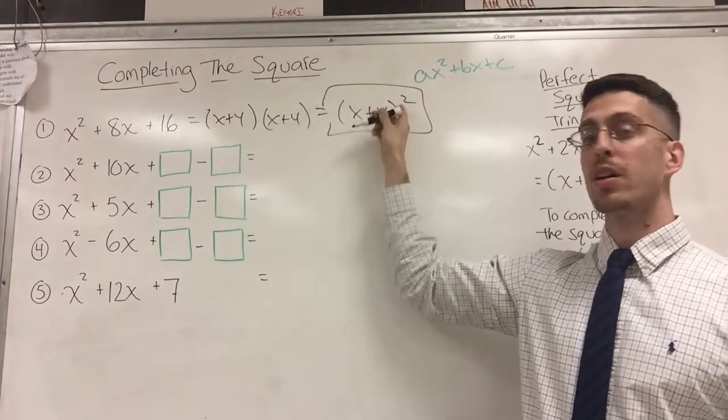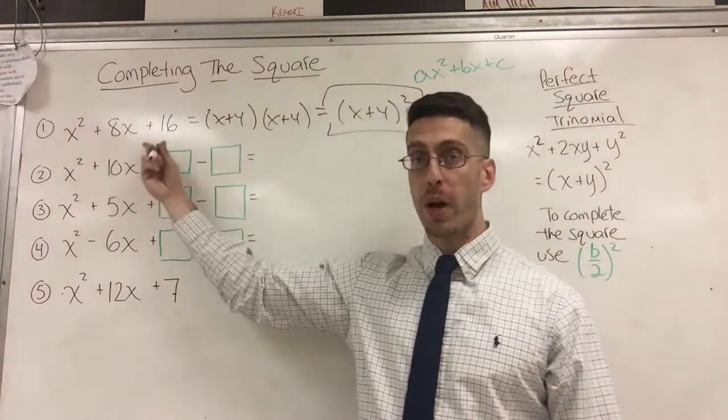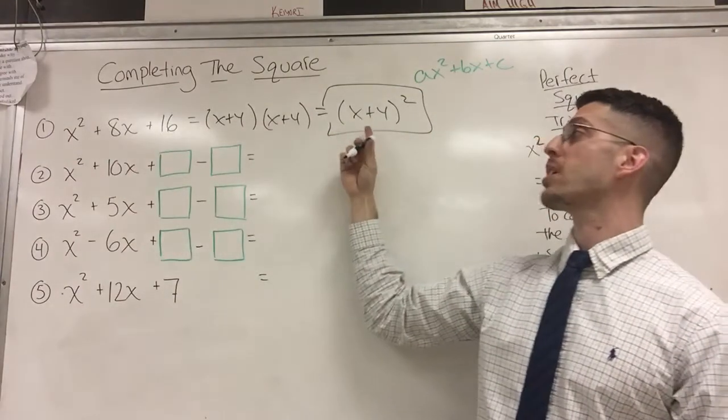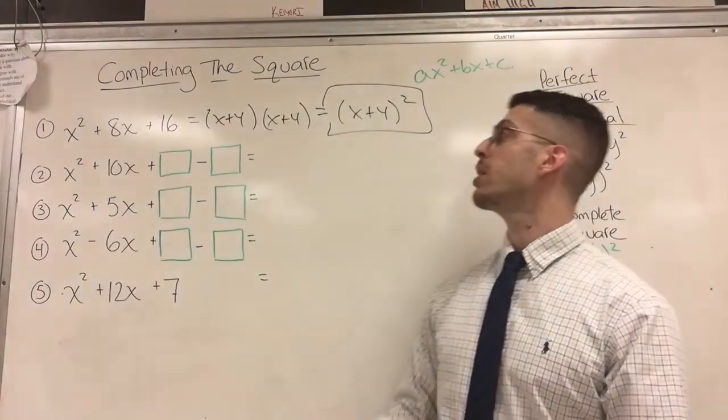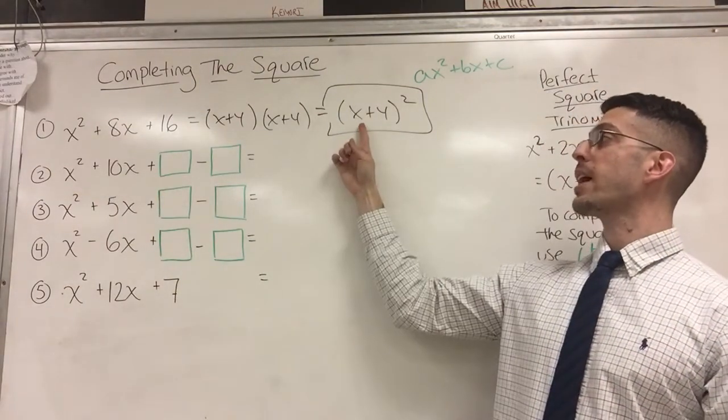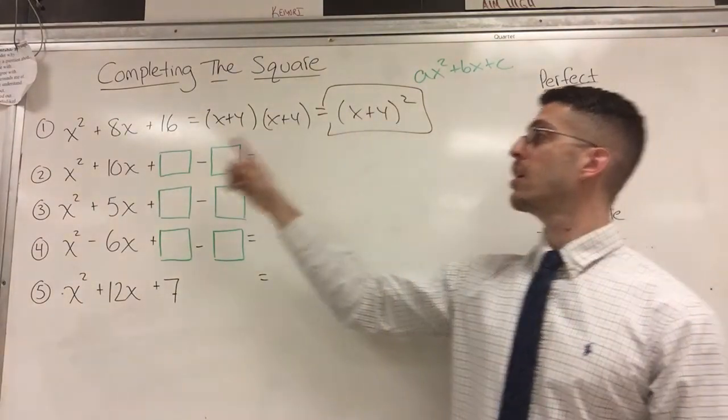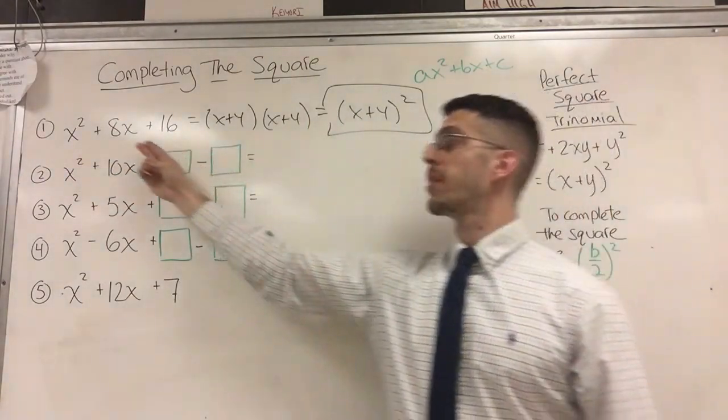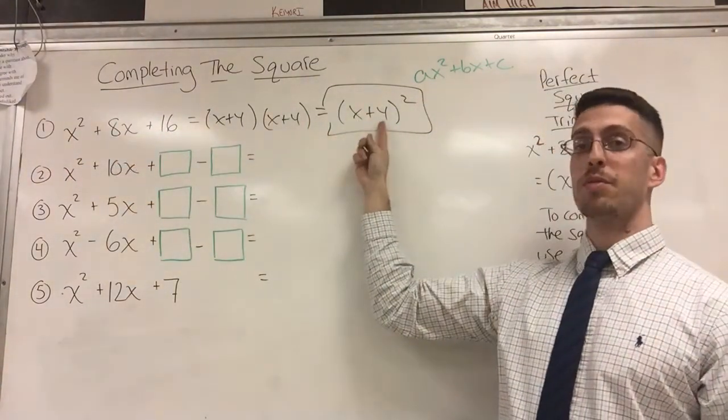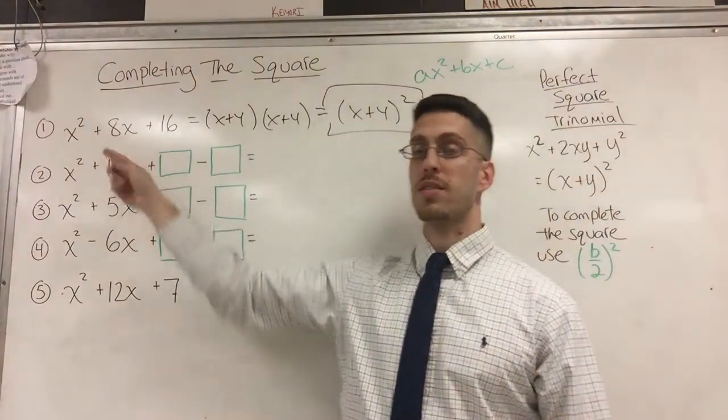So really, since this repeats, I just have to write it once as (x + 4)². Something squared makes this a perfect square trinomial. If it can be represented as something squared, it's a perfect square trinomial. Notice again, the x and the 4. Here's my x². Here's my 4². And the middle is really just x times 4 times 2, which is 8x.